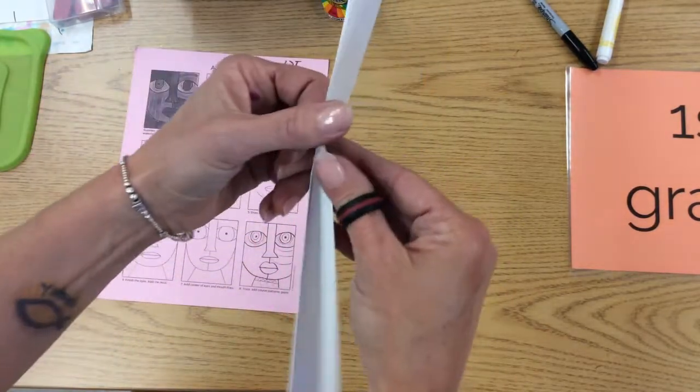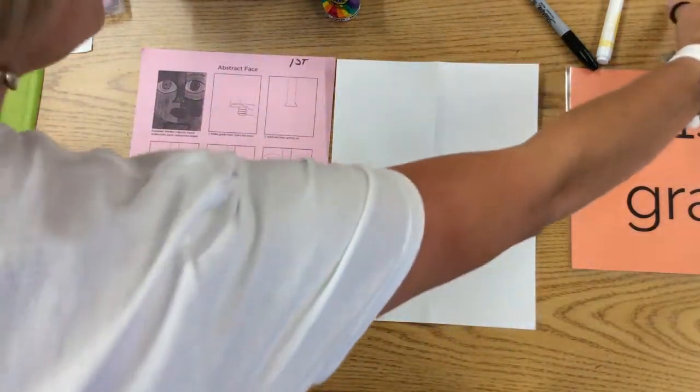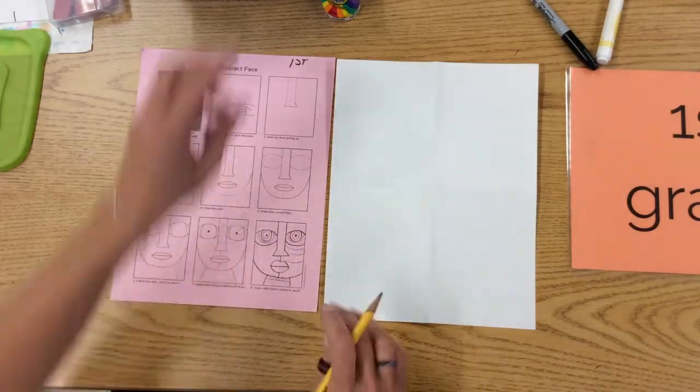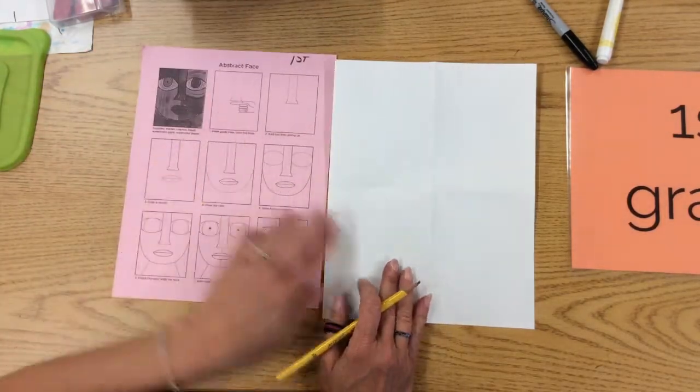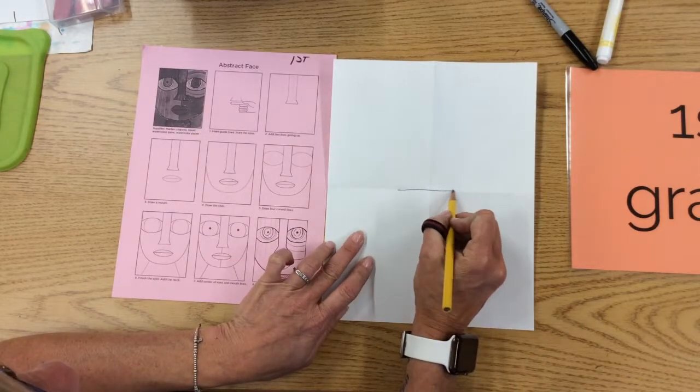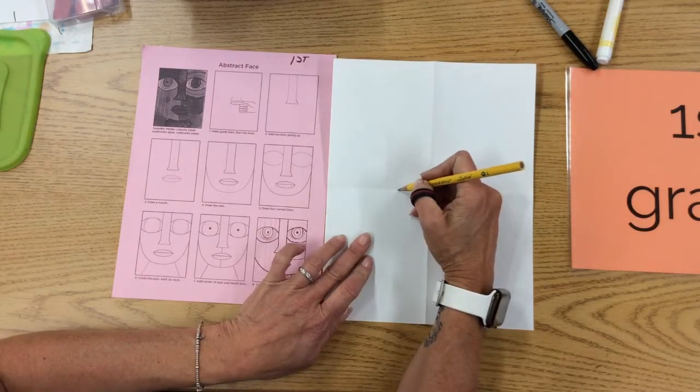Check your shoulder buddy, see how they're doing. There's our scrap paper, turn it over. Now in this section, artist, use your pencil. I want you to look, use your artist eyes. First section is your nose. Right on that line, draw me a horizontal line. Check your shoulder buddy. If it's too big, that's okay, you're just practicing.